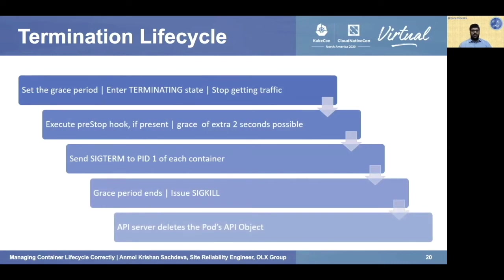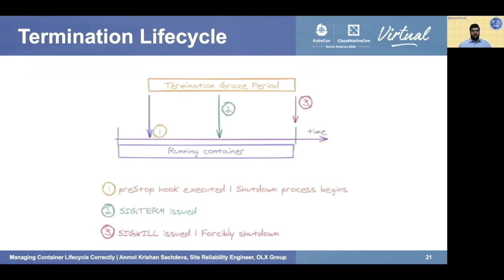Let's analyze the termination lifecycle through a time-series graph. The pod enters the terminating state and stops receiving traffic. The grace period is set and the pre-stop hook starts executing. Once the hook completes, SIGTERM is issued to all containers in the pod. When the grace period ends, SIGKILL is issued and the pod forcibly shuts down.